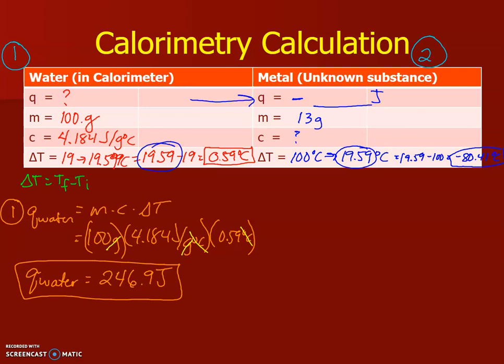So what I do with this value is I put it here, 246.9 joules, and that is how much energy the metal lost. So that's negative 246.9 joules on the other side. Now I can do my second part, which is use this Q equals mc delta T equation but solve for c.